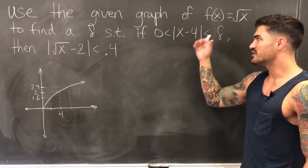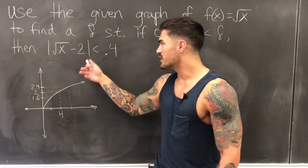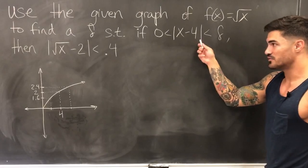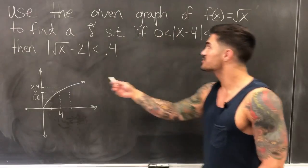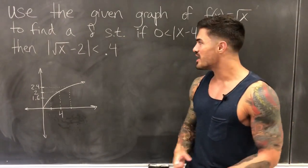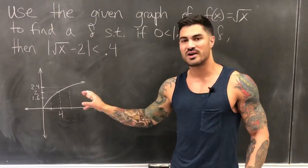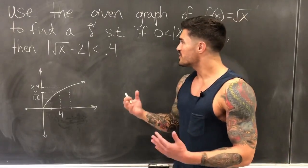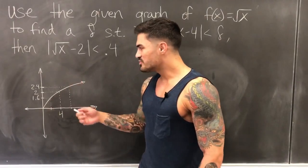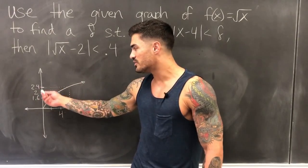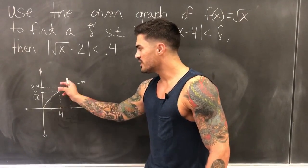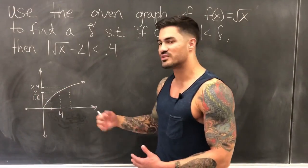We're looking at the limit of √x as x approaches 4, which equals 2, given epsilon = 0.4. Epsilon represents closeness to L, so we want f(x) to be within 0.4 of 2 — that's the interval (1.6, 2.4). We need to find a delta such that all x values within delta distance of 4 give corresponding y values within this 1.6 to 2.4 interval.